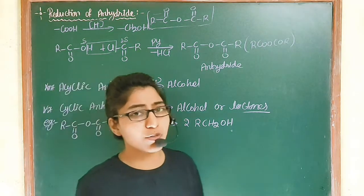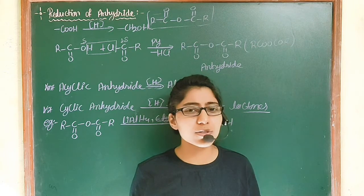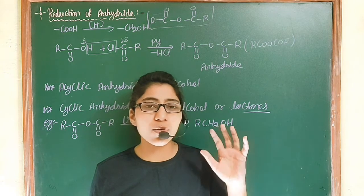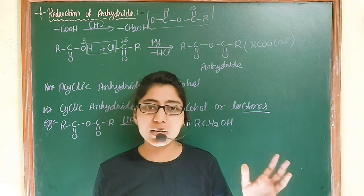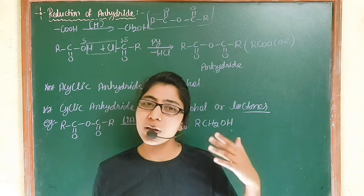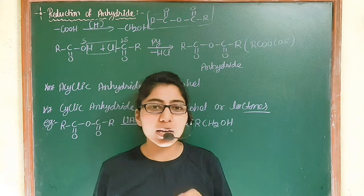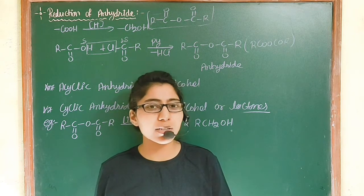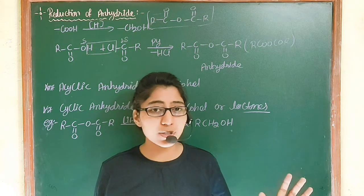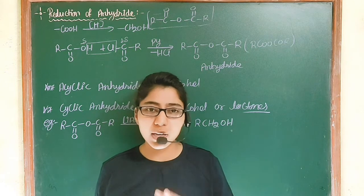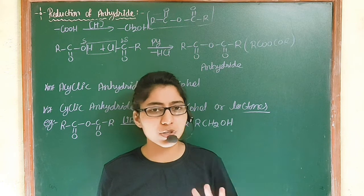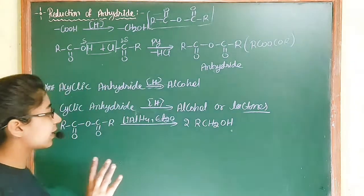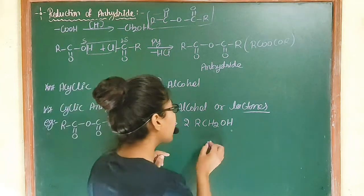The mechanism of this reaction is not typically asked in exams. In organic chemistry there are many reactions that we can't cover in full detail. The important mechanisms I will always discuss for you. For acyclic anhydride reduction, the formation of 1° alcohol is the product, because when we reduce a carboxylic acid derivative, we get 1° alcohol. Acyclic anhydride also gives 1° alcohol.